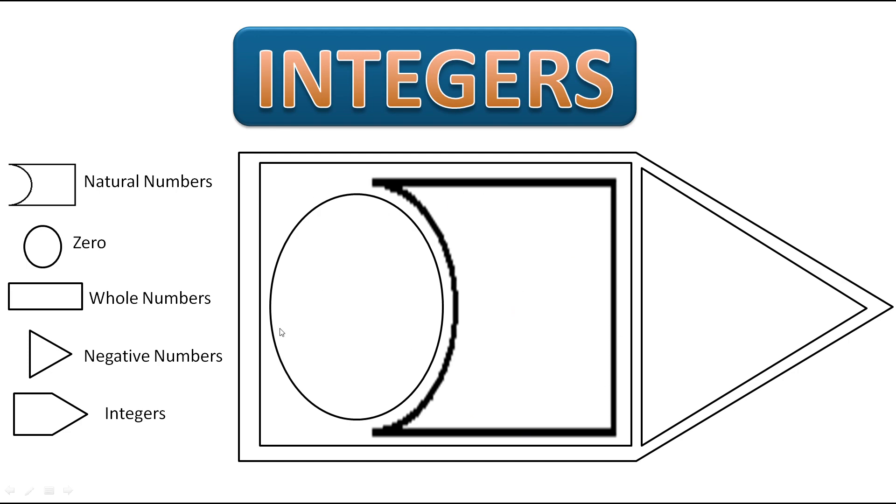When we include this with 0, this part is called whole numbers. And when we include this negative number, this triangle expresses negative numbers. When we include negative numbers, this whole figure is called integers.